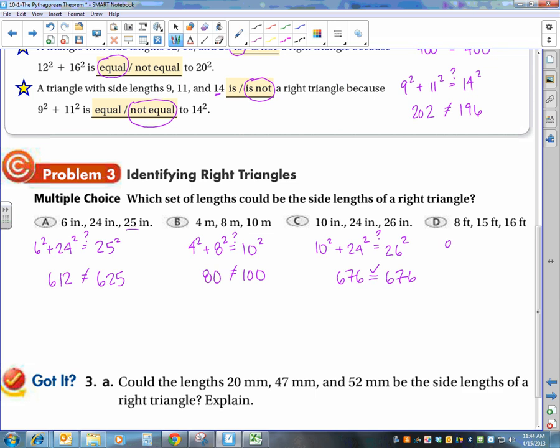4 squared plus 8 squared is 80. 10 squared is 100. So that doesn't work. 10 squared plus 24 squared equal to. Does that equal 26 squared? Well this gives us 676. And this gives us 676. So this one does work.